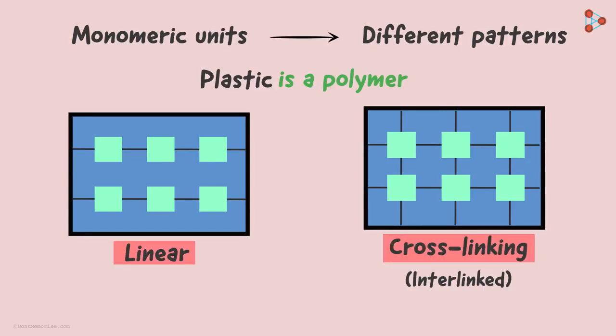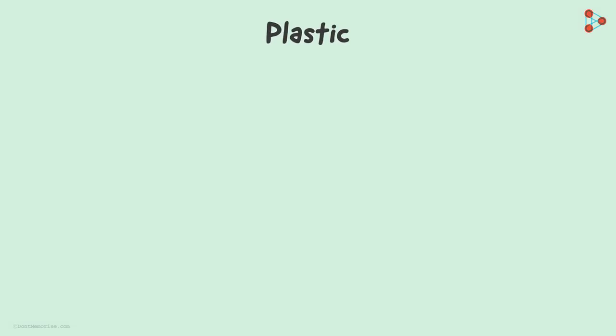Not only the arrangement, but even the difference in monomeric units that make up the polymer is responsible for giving us the various forms. However, plastics are usually classified in two major categories.